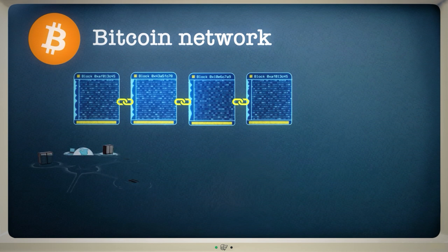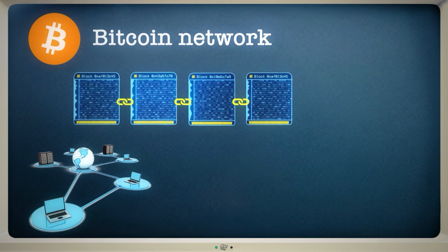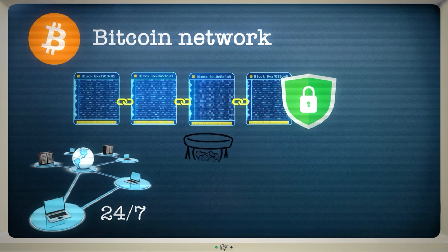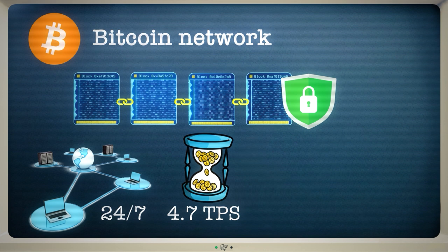The network is run by thousands of computers around the world. This means that it's always online and very difficult to disrupt. Bitcoin's blockchain can only handle a few transactions per second, and fees can be unpredictable.